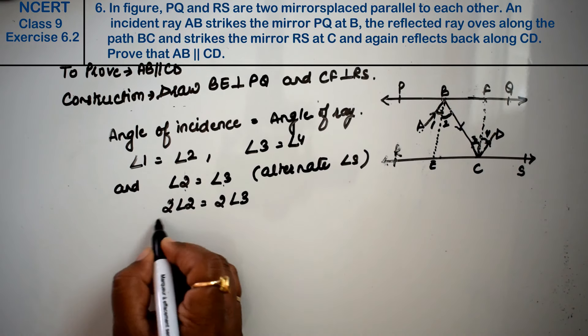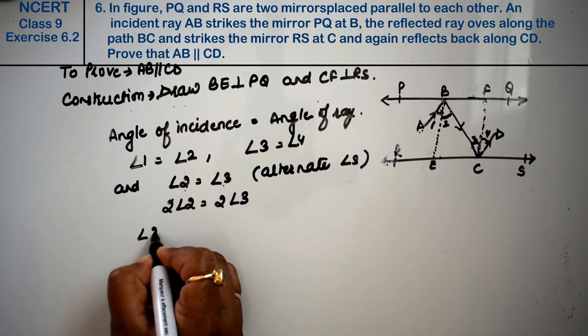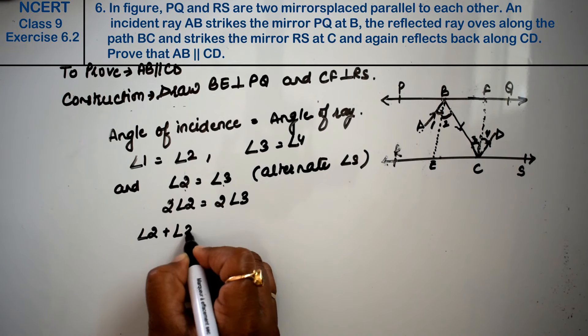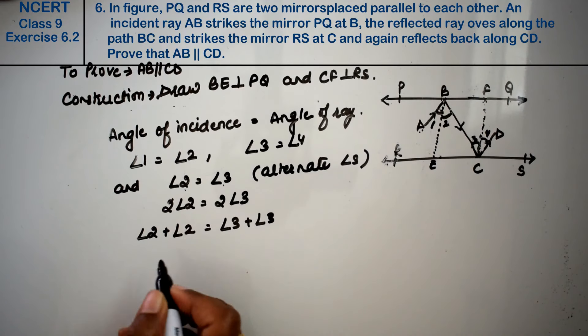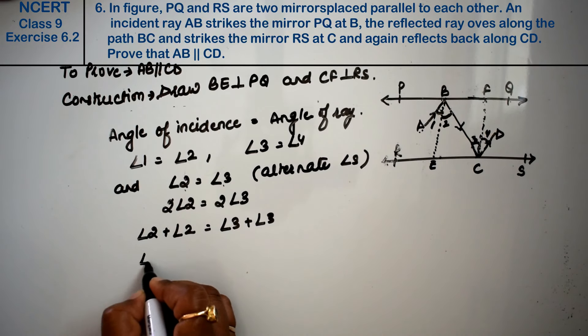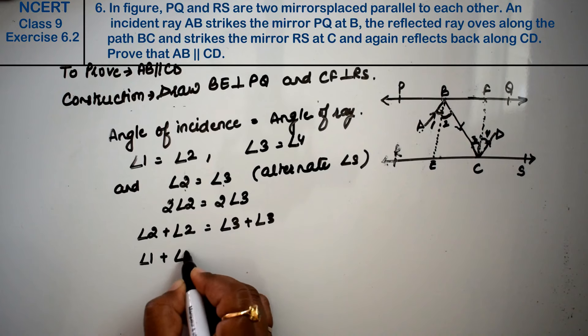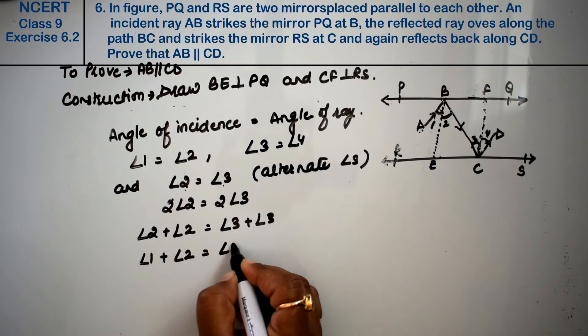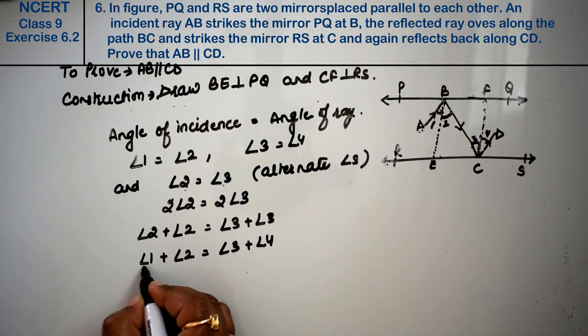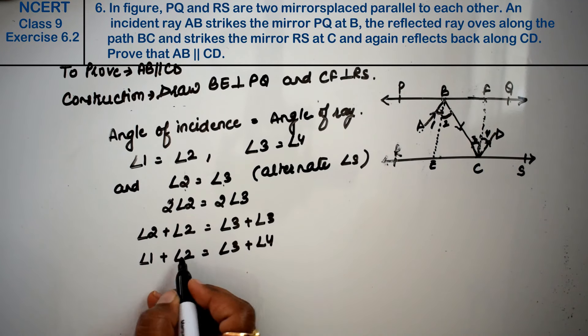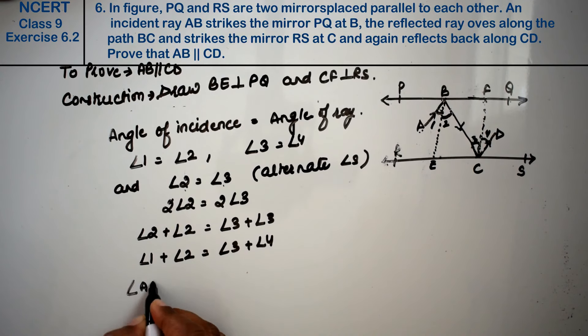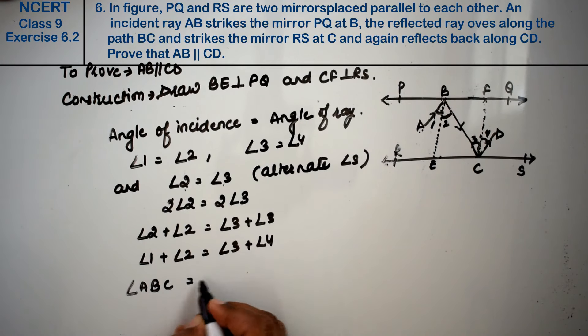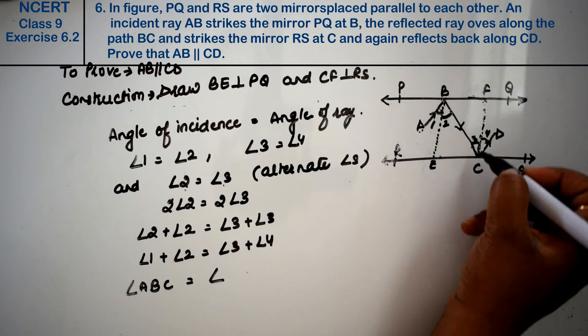What can we write? Angle 2 plus angle 2 equals angle 3 plus angle 3. Now, angle 2 was equal to angle 1, and angle 3 was equal to angle 4. Now, what is angle 1 plus angle 2? This angle. Angle ABC is equal to angle BCD.